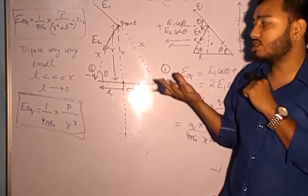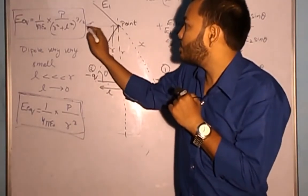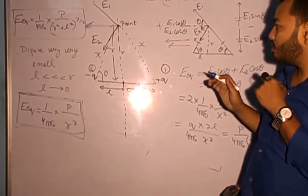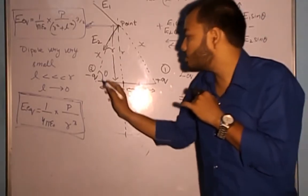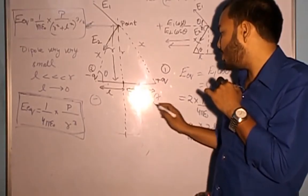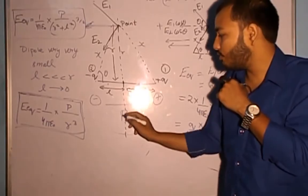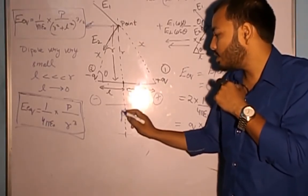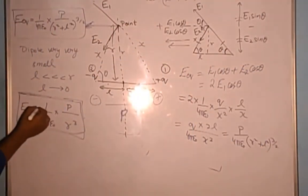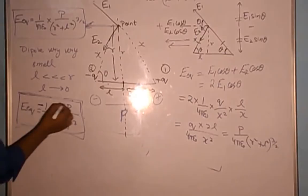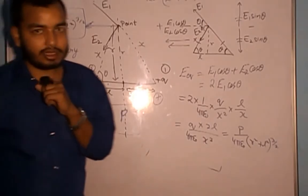The expression is not complete yet because electric field is a vector quantity and we must specify its direction. The direction of the electric field at the equatorial position is opposite to the dipole moment vector p. The dipole moment direction is from the negative charge to the positive charge, and the electric field is antiparallel to it. So we write a negative sign: E⃗ = −(1/4πε₀) × p⃗ / R³. Thank you.